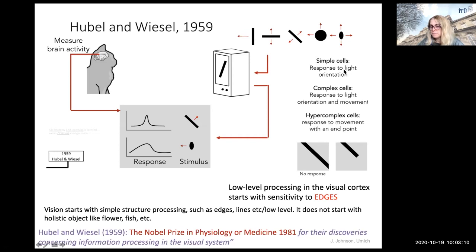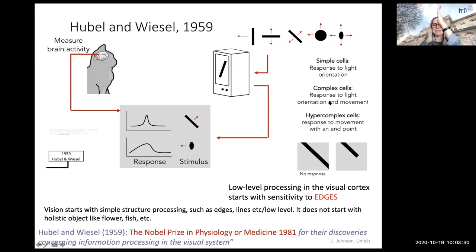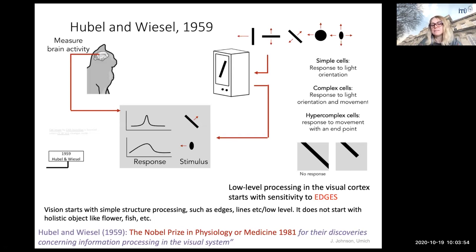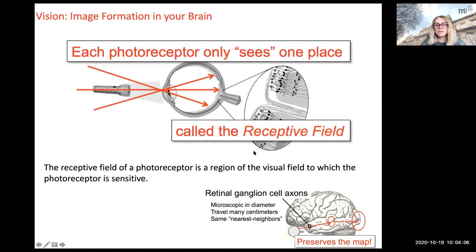Simple cells respond to changes in light orientation. Hubel and Wiesel also showed a hierarchical structuring of neurons: complex cells respond to light orientation and movement — when a scene is static, some neurons don't respond, but when it moves, they respond. Some neurons respond to movement with an endpoint. Low-level processing in the visual cortex starts with sensitivity to edges. This course covers a lot of low-level processing because vision really starts there, and Hubel and Wiesel truly deserved the Nobel Prize.